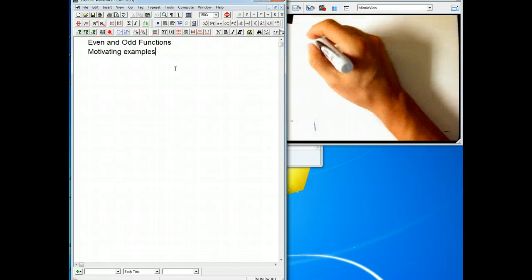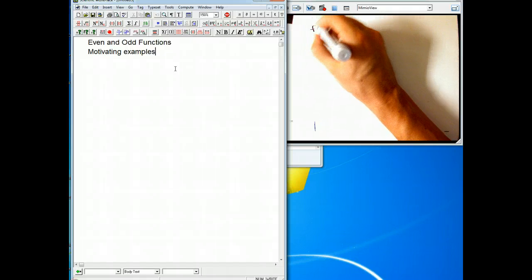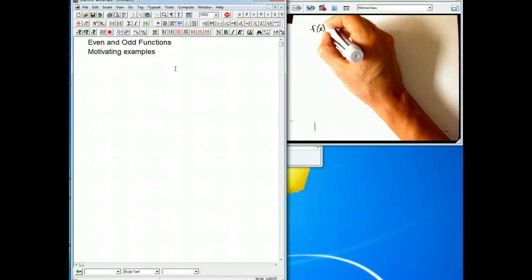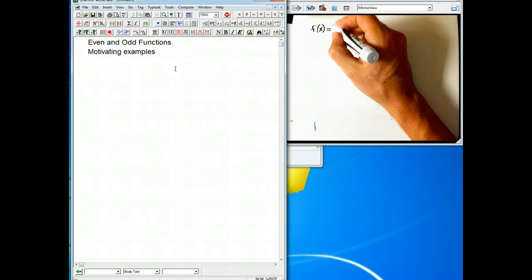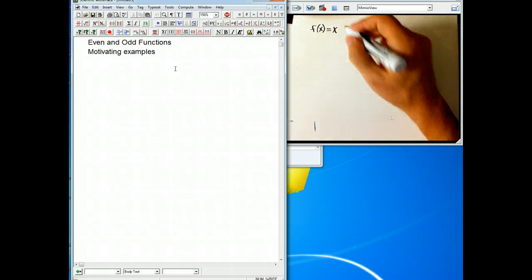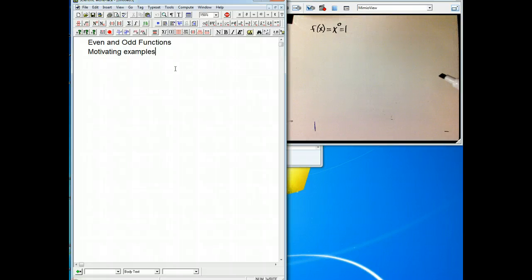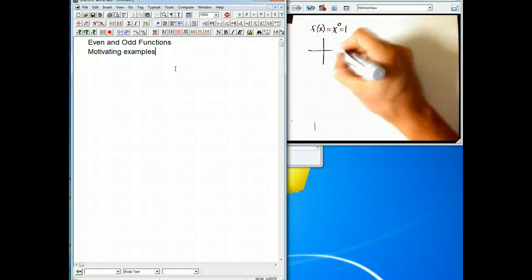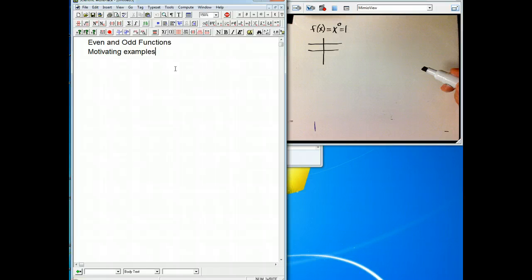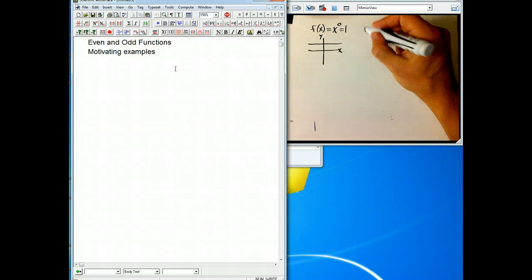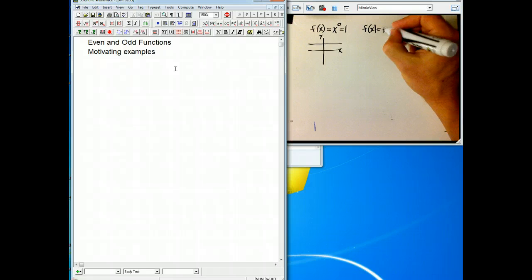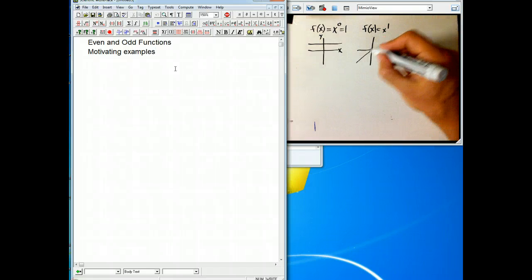I'm going to look at some really simple examples, just powers. I'll start with an absurdly simple power, x^0, which always gives you 1. That looks like this. If that's the x-axis, that's the y-axis. If I look at f(x) = x^1, then that looks like this.